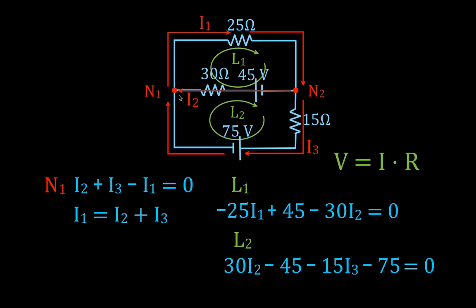We now have all the equations we need: three unknowns — I1, I2, I3 — and three equations, so we can solve for all three currents.